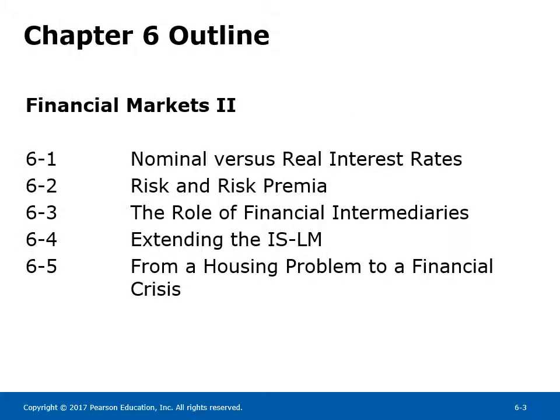Chapter 6 outline — Financial Markets 2. Section 6-1: Nominal vs. Real Interest Rates. Section 6-2: Risk and risk premia. Section 6-3: The role of financial intermediaries. Section 6-4: Extending the IS-LM. Section 6-5: From a housing problem to a financial crisis.